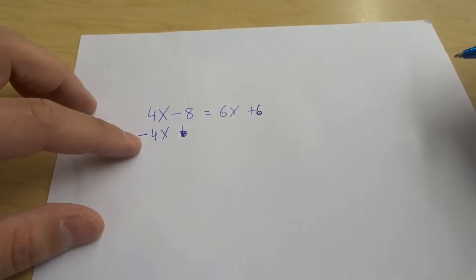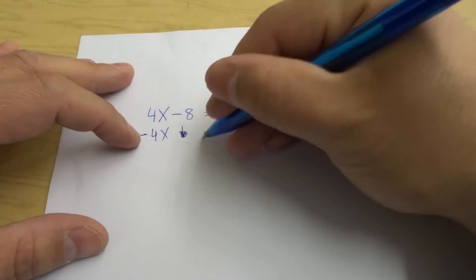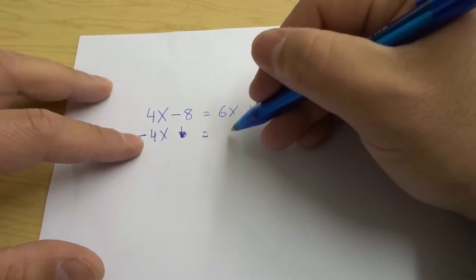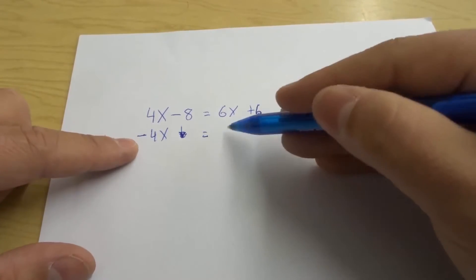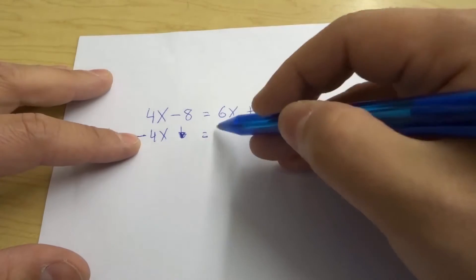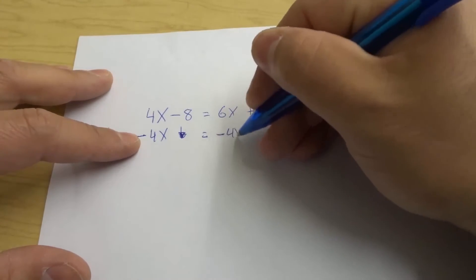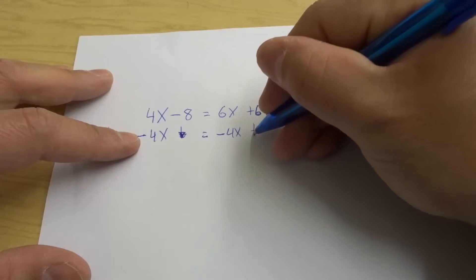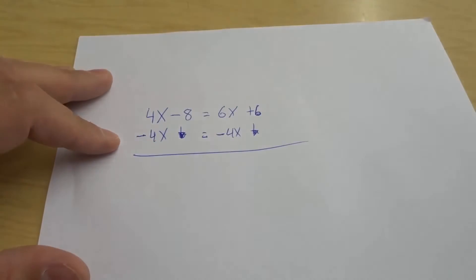And then is equal to and then we're going to minus 4x on this side because whatever we do on this side we do on the other side of the equals. Since they're equal that means whatever we do here we also do here. So we minus 4x from here and then this also gets brought down.